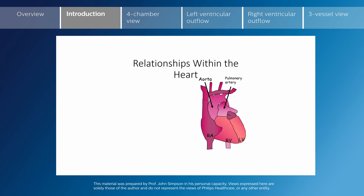If we look at the anterior-posterior relationships of the heart, we can see the superior vena cava coming down into the right atrium here and the inferior vena cava also. The right atrium and right ventricle are more anterior than the left ventricle, which is seen here.